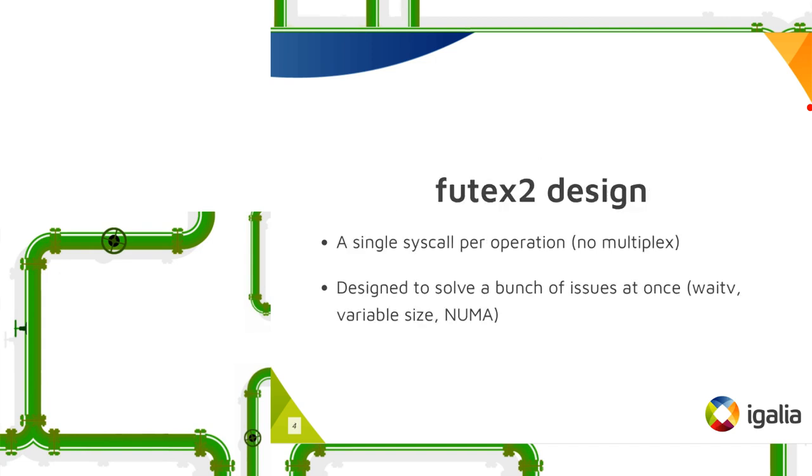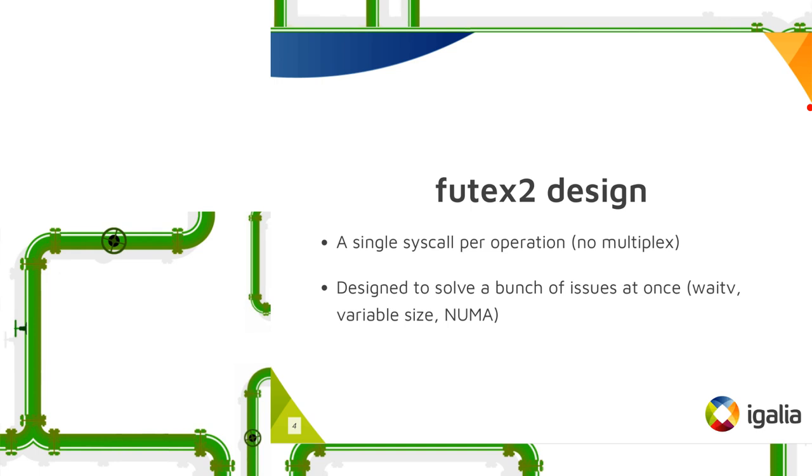And on this new Futex2 design, we will have just one syscall per operation, no more multiplexing, no one's like that anymore. This is designed to solve a bunch of issues like waitv, variable size Futex, and the NUMA thing.